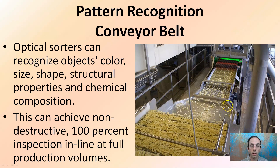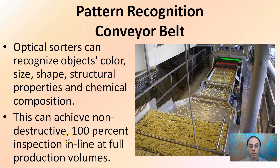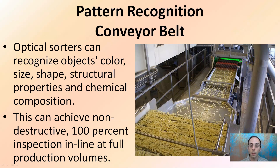Conveyor belts also have pattern recognition, typically computer-based but can also be human-based. Optical sorters can recognize objects' color, size, shape, and structural or chemical composition, and allocate them into different areas. This can be achieved in a non-destructive 100% inspection inline at full production volumes, ensuring consistent product output or allocating items into different areas by size or color. A lot of this is done with automation and optical sensors, but it's important that computers can recognize patterns.